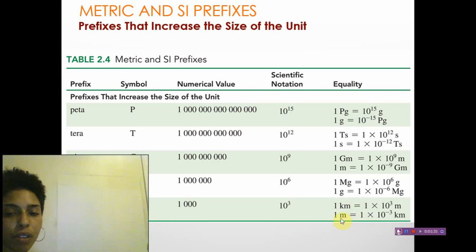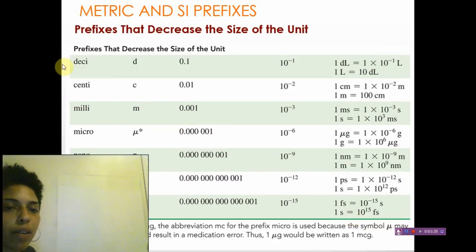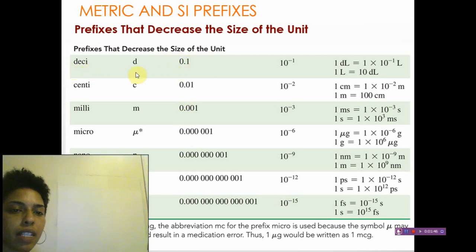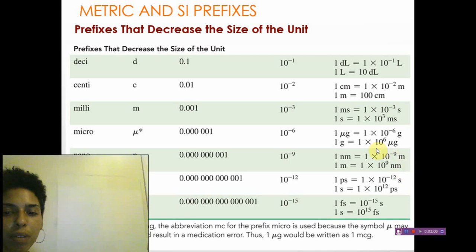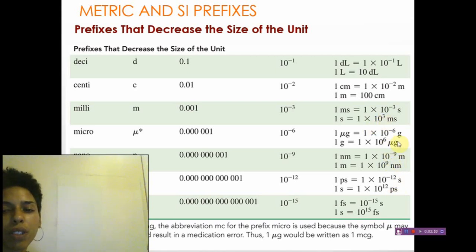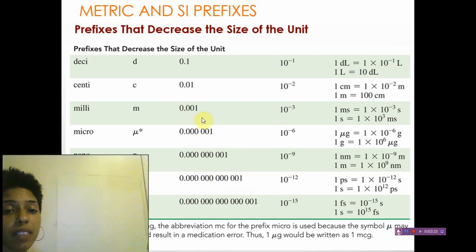Here we have prefixes that decrease the size of a unit. Notice that these powers of ten are all negative, and we have decimals for these prefixes. Deci is 'd', centi is 'c', milli is 'm', micro — you should know these and memorize their definitions. For example, one nanometer equals 1×10⁻⁹. Notice that prefixes go in front of any unit — grams, seconds, liters — and each prefix has its own definition.